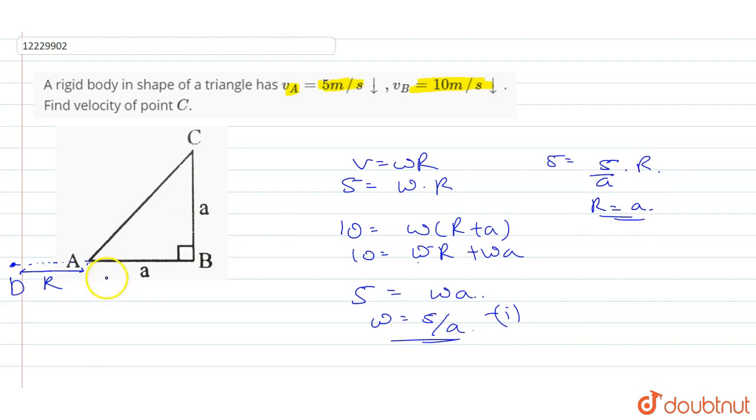So this distance is 2a. The distance is under root 4a square plus a square, which is a root 5.